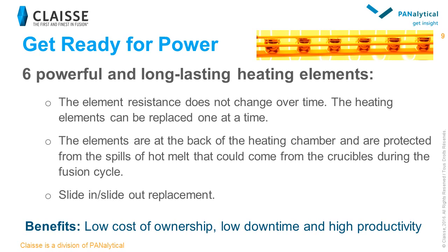One of the advantages of Deox Advanced is its powerful and long-lasting heating elements. We kept the same sturdy and reliable heating elements in this new version. Since their resistance does not change over time, they can be replaced one at a time without changing the heat distribution inside the furnace. Also, they are located at the back of the crucibles in the heating chamber, meaning they are protected against spilling of hot melt from the crucibles during the fusion process. There is virtually no need to replace the heating elements even after years of operation. However, if needed, the user can easily slide them out from the top of the heating chamber and slide new ones in.